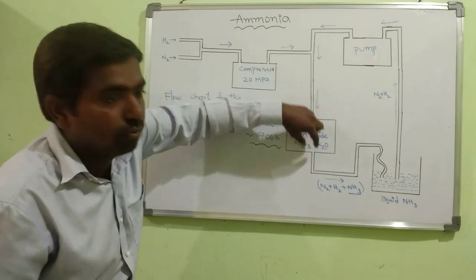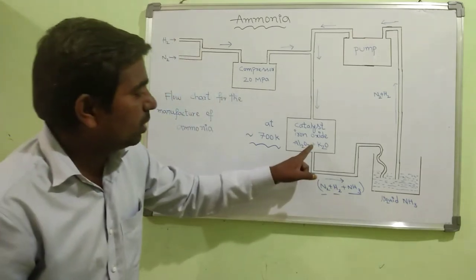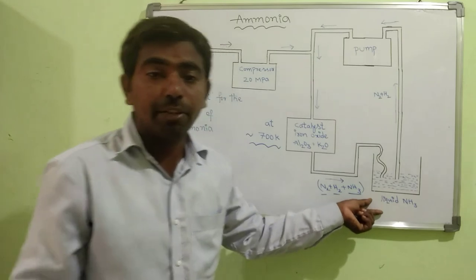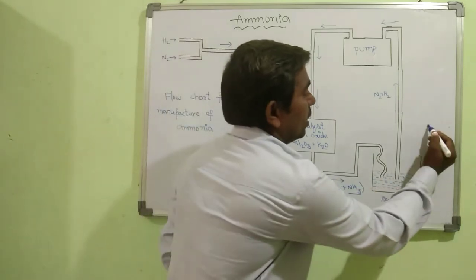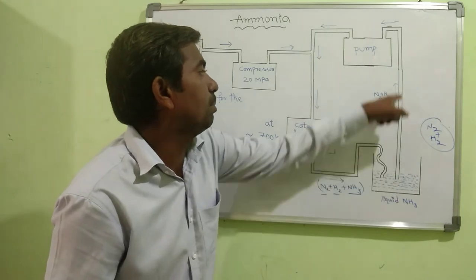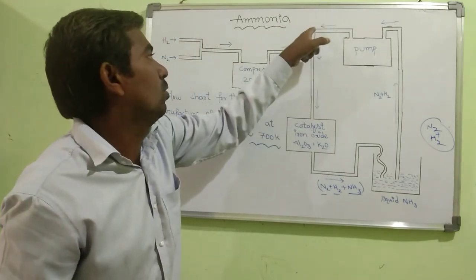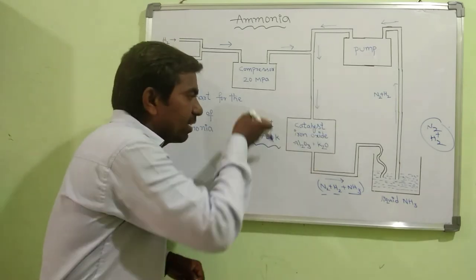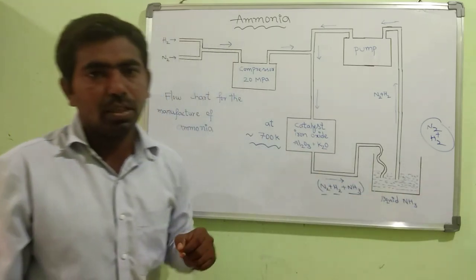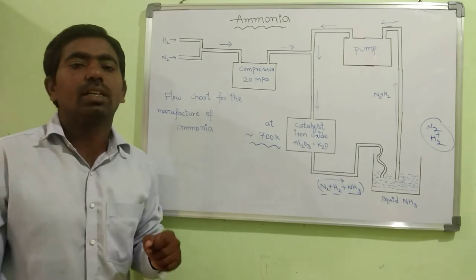Under these conditions, the mixture of gases combines and converts into liquid ammonia. The three substances — nitrogen, hydrogen, and ammonia — pass through a pump and enter the container, where liquid ammonia is collected. The remaining two unreacted gases pass through another pump back into the catalyst room, where they react again and convert into more ammonia. Finally, liquid ammonia is collected from the container room.